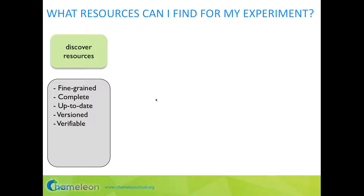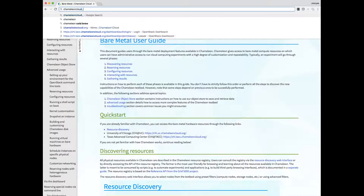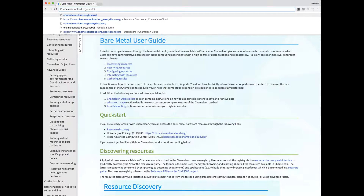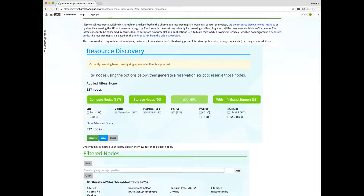Because we want to measure how Spark performs in terms of CPU usage, we plan to measure it with our state-of-the-art platform. All Chameleon physical resources are described in the Chameleon Resource Registry. Users can consult the registry via the Resource Discovery Portal at chameleoncloud.org/user/discovery. It is also accessible from the Bare Metal User Guide in the Discovering Resources section.